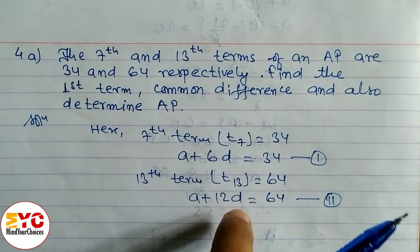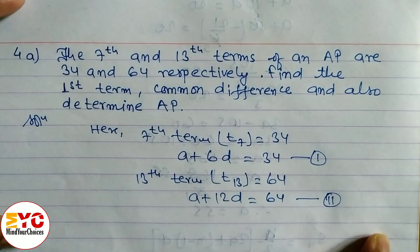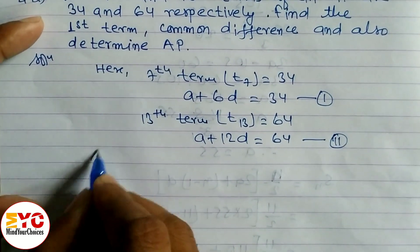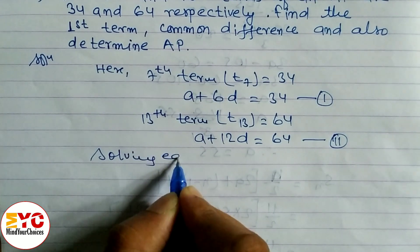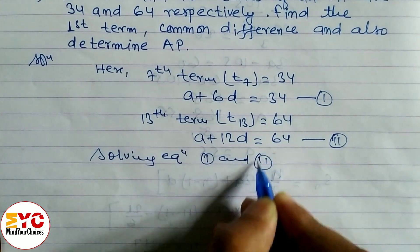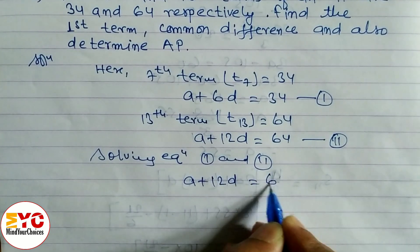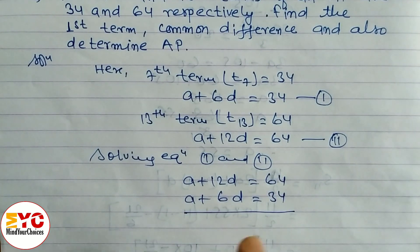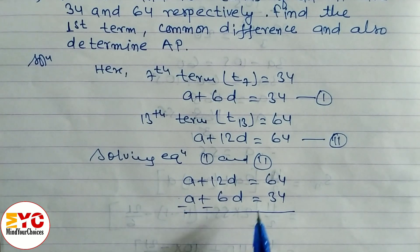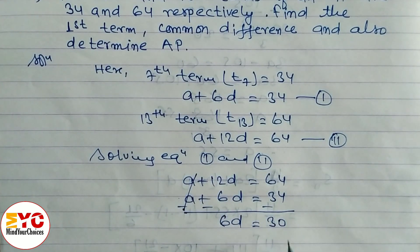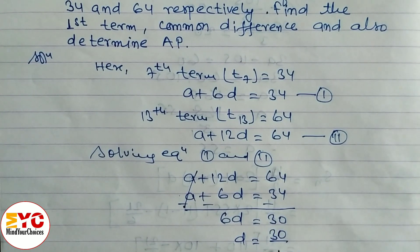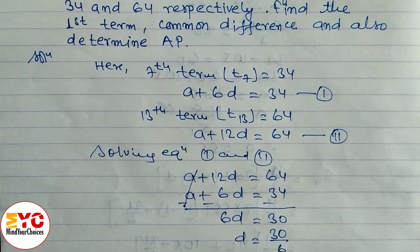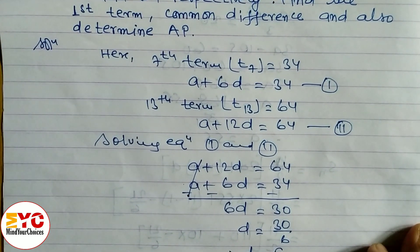Now we solve equations 1 and 2 to find the value of a (first term) and d (common difference). Using the elimination method: a plus 12d equals 64, minus a plus 6d equals 34. Subtracting gives 6d equals 30, so d equals 30 divided by 6, which gives d equals 5.